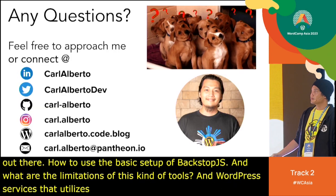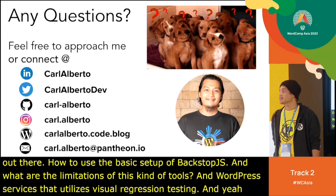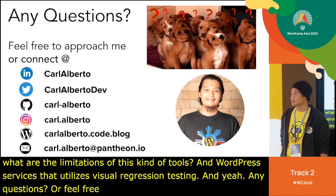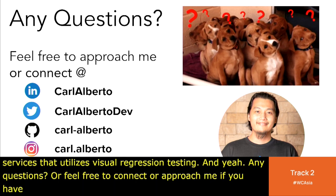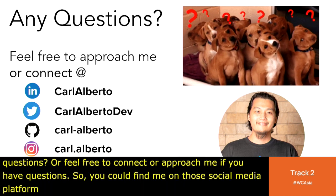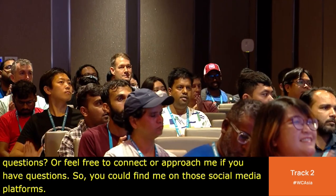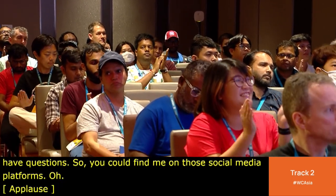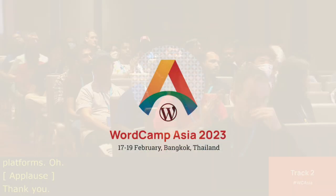To recap: we covered an intro to automation, visual regression tools available, the basic setup of BackstopJS, the limitations of VRT tools, and WordPress services that utilize visual regression testing. Feel free to connect with me on social media or ask questions. Thank you!